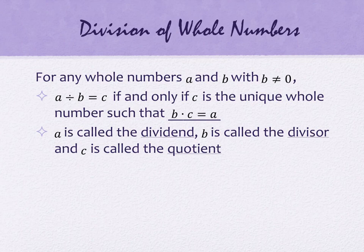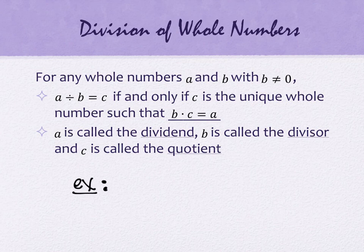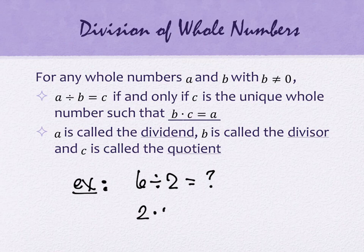This is typically how division is presented when children first learn about it — they think of it as filling in the gap of a missing multiplication problem. So it would look something like this with some numbers: 6 divided by 2 equals something — question mark. The question is, what do I need to multiply by 2 to equal 6? So we turn the division statement into a statement about multiplication with what we'd call a missing factor — what's missing in this spot to make this work?